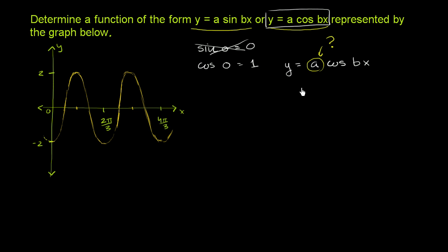We already saw if we just had cosine of bx, when x is equal to 0, cosine of b times 0 would just be cosine of 0, and it would get us to 1. But we're not at 1. We're at negative 2.